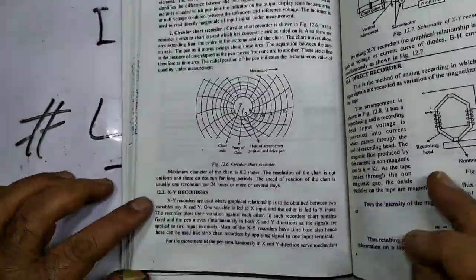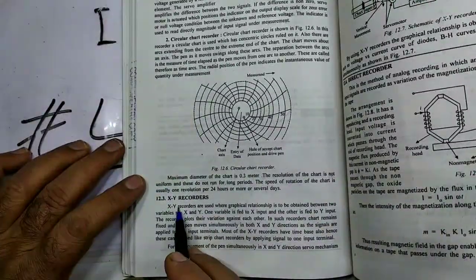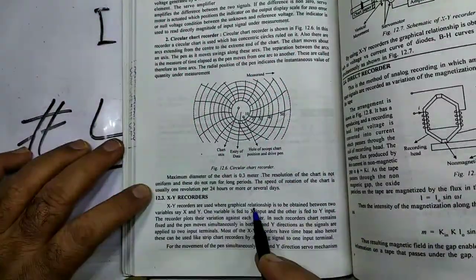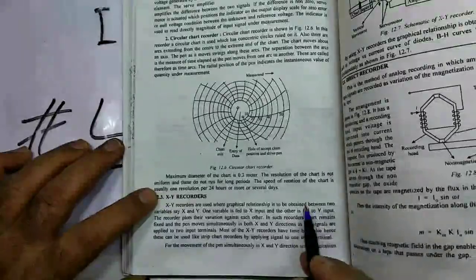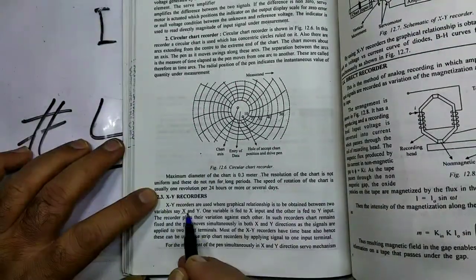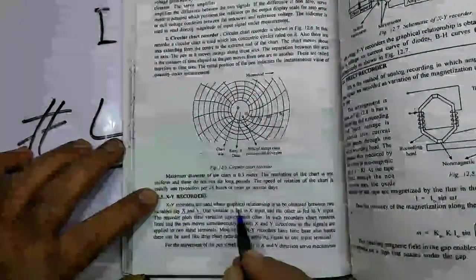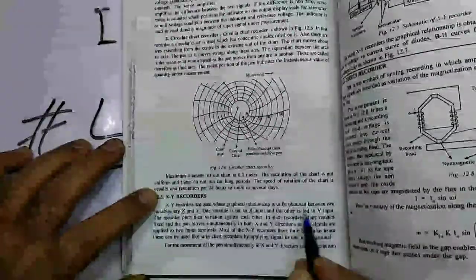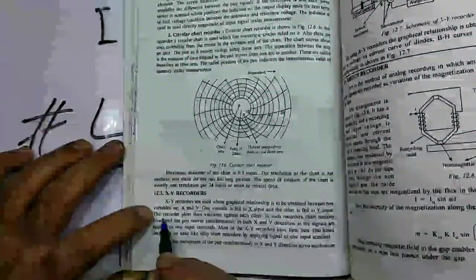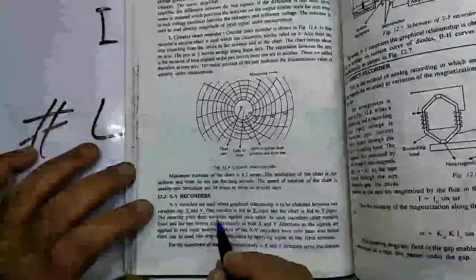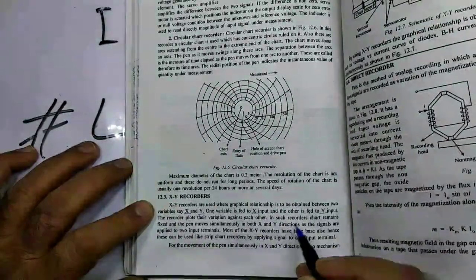Next is XY chart recorder. XY chart recorders are used where graphical relationship is to be obtained between two variables, say X and Y. One variable is fed to the X input and the other is fed to the Y input. The recorder plots their variation against each other. In such recorders, chart remains fixed and the pen moves simultaneously in both X as well as Y direction as the signals are applied to two input terminals.